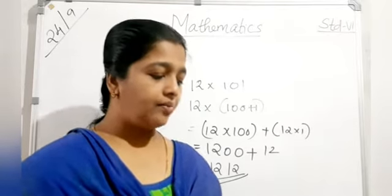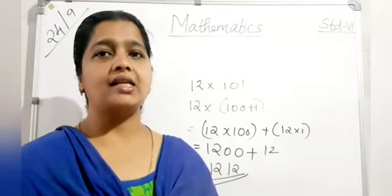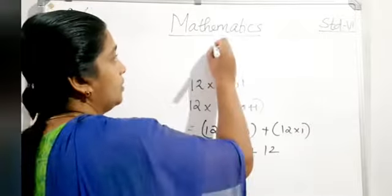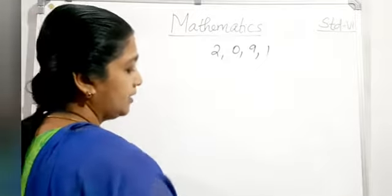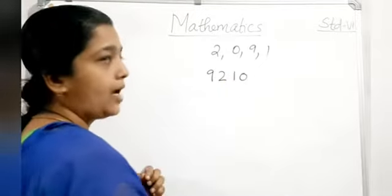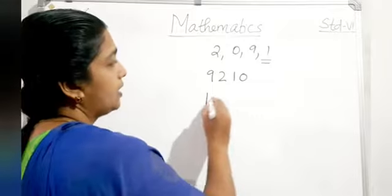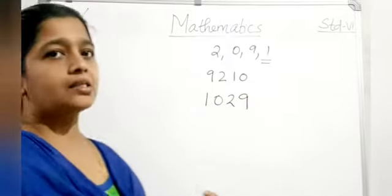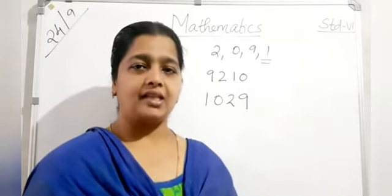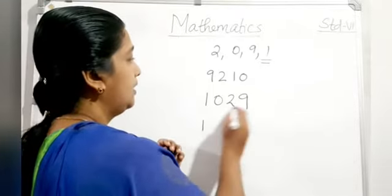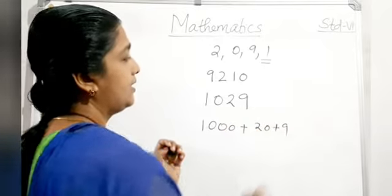From chapter 1: using given digits, form the greatest and smallest number. Example with digits 2, 0, 9, 1: greatest number is 9210. For smallest, we cannot start with 0, so smallest is 1029. Also study expanded form: for example 1000 + 0 + 20 + 9 is the expanded form. Given an expanded form, writing the numeral is called standard form.